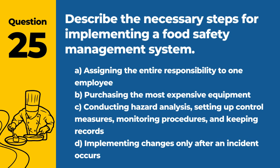Question 25. Describe the necessary steps for implementing a food safety management system. The answer is C: Conducting hazard analysis, setting up control measures, monitoring procedures, and keeping records. A systematic approach to food safety management helps prevent foodborne illnesses.